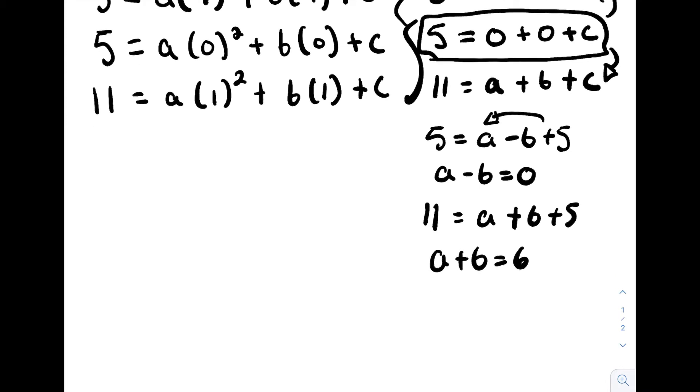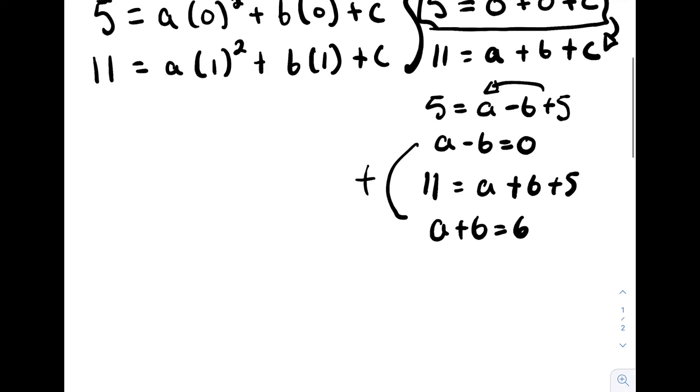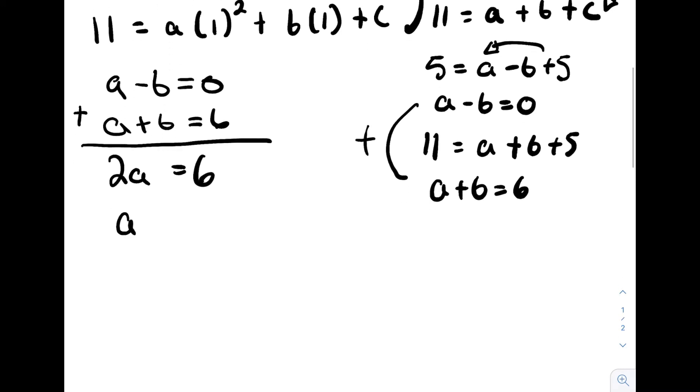So now what we can do is add these two formulas together. So if we do that, we'll see that a minus b equals 0 plus a plus b equals 6. If we evaluate this, we'll get 2a equals 6. We evaluate that, divide by 2 on both sides. We'll see that a is equal to 3. So we have our second value.